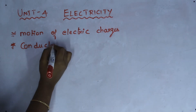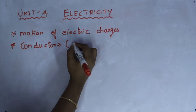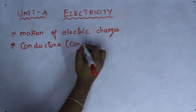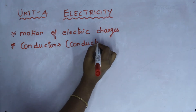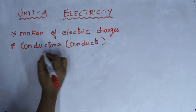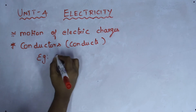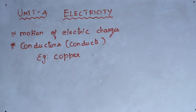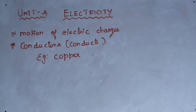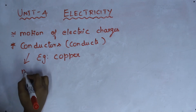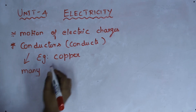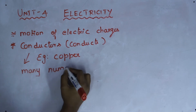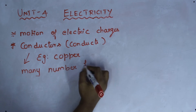What is a conductor? A conductor is nothing but a material which conducts electricity. A very good example of a conductor is copper — copper is a very good conductor of electricity. In simple terms, a conductor is a material which has a large number of free electrons.